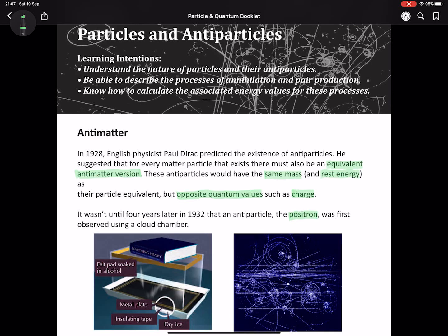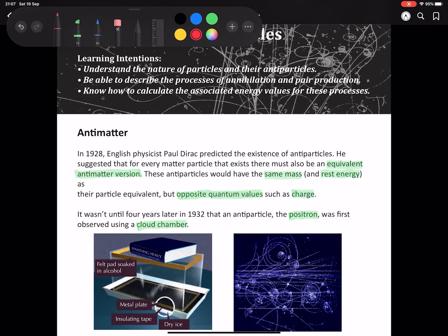It took a few years, but the first one discovered was an anti-electron, which was a positron because of positive charge. A cloud chamber was used to see this, where you have an alcohol vapour continuously being cooled by dry ice at the bottom of the chamber, and this allows interactions to be observed.